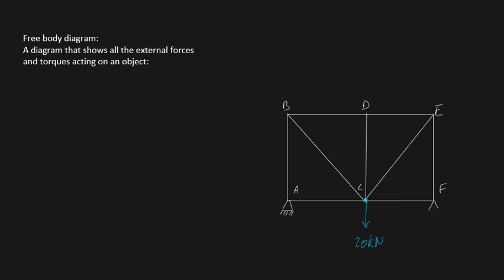Point F is supported by something we call a roller support. When we're talking about drawing a free body diagram, we typically mean replacing the supports with external forces.